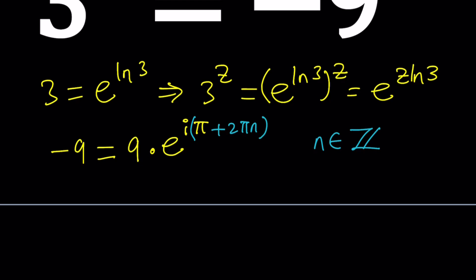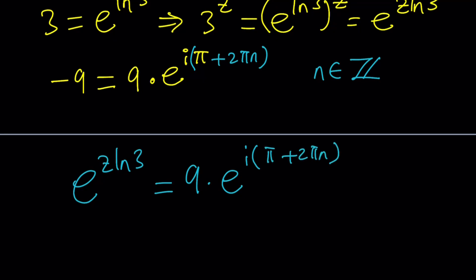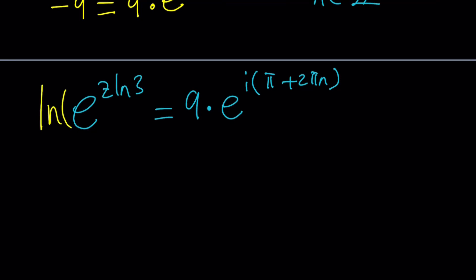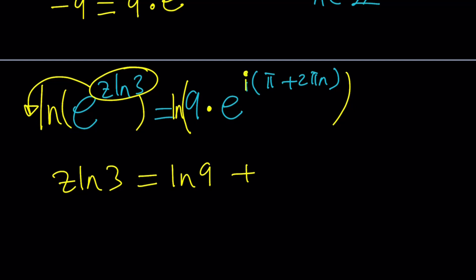Now we're going to plug these in, because everything is in polar form thanks to Euler. On the left we have E to the power z·ln(3), and on the right-hand side we have 9 times E to the power i·(π + 2πn). Next, we natural log both sides. That gives us z·ln(3) on the left — since ln(E) is 1, that drops out — and on the right, the natural log of a product turns into a sum: ln(9) plus i·(π + 2πn).